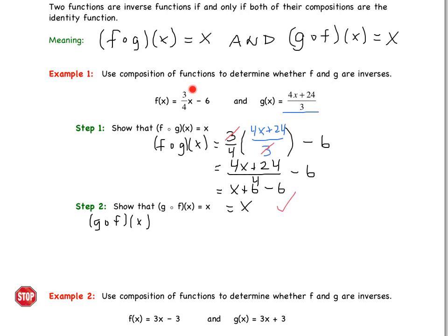This time, we're taking function f and plugging it into the x in function g. So let's go ahead, and we'll call function f green. So now we've got 4 times 3 fourths x minus 6, and now we've got to continue, plus 24 all over 3. Distributing that 4 in the numerator to each of these guys here, we will get 4 times 3 fourths is simply 3x. 4 times negative 6 is negative 24.